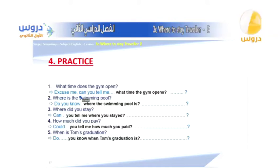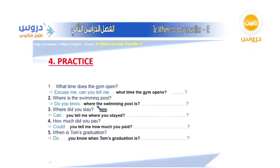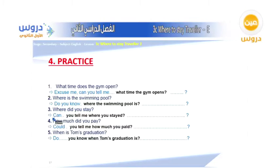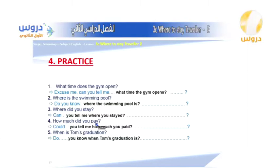Example two — direct: 'Where is the swimming pool?' Indirect: 'Do you know where the swimming pool is?' Example three — direct: 'Where did you stay?' Indirect: 'Can you tell me where you stayed?' Example four — direct: 'How much did you pay?' Indirect: 'Could you tell me how much you paid?'